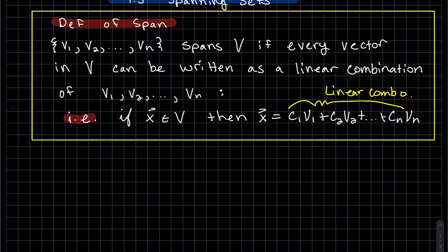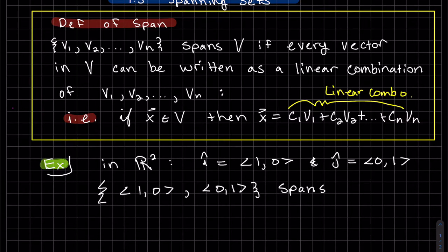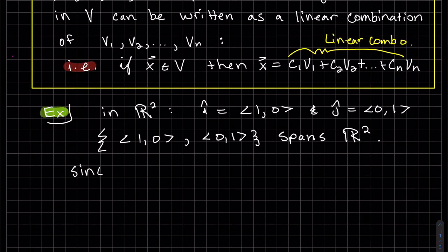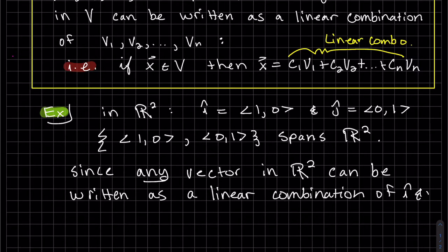So let's look at an example. This is one of our simple examples so you can understand what it's saying. We have i-hat, which is our unit vector in the x direction, and we have j-hat, which is our unit vector in the y direction. So we have the set of these two vectors. These vectors span R² because any vector in R² can be written as a linear combination of those two, i-hat and j-hat.